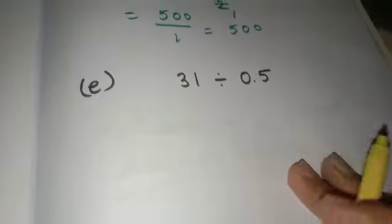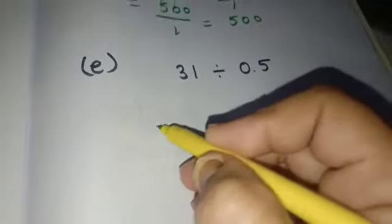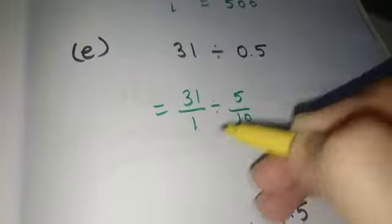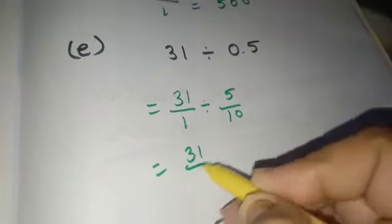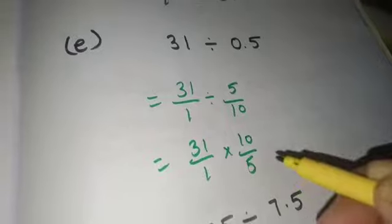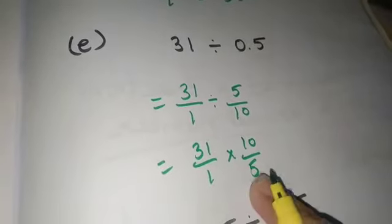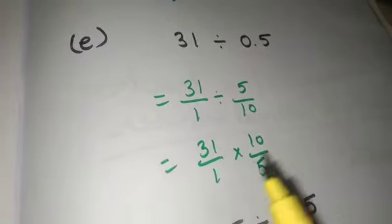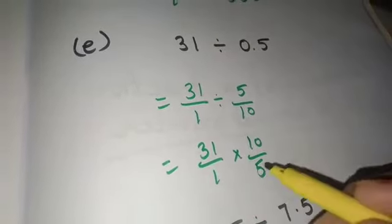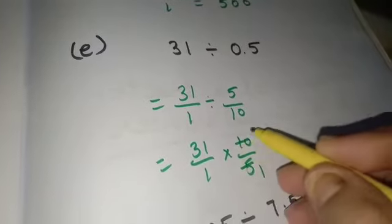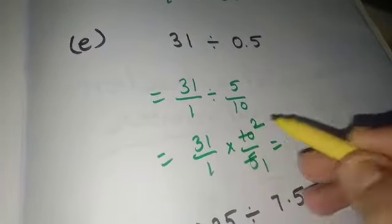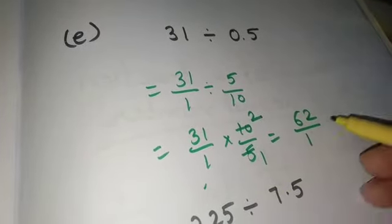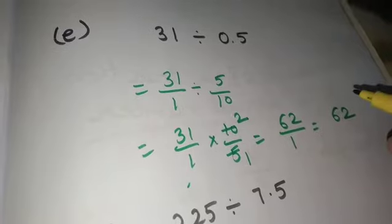Come to E part. 31 by 1 divides 0.5, which is 5 by 10. 31 by 1 multiply 10 by 5. Now this 5 cannot cancel 31, so try to cancel in this form. 5 times 2 is 10. 31 multiply 2 is 62, 1 times 1 is 1. 62 by 1, the answer is 62.